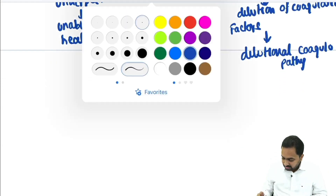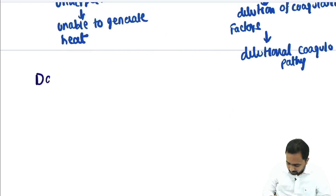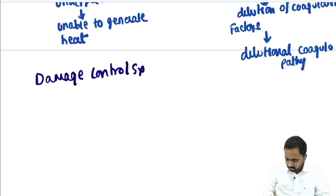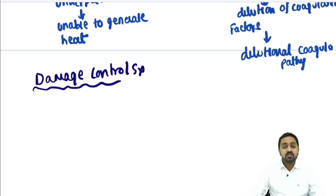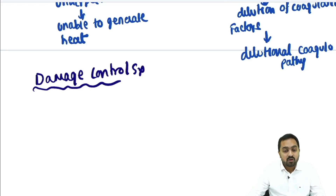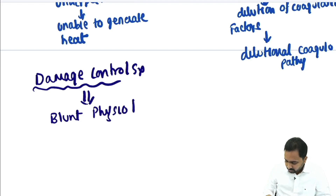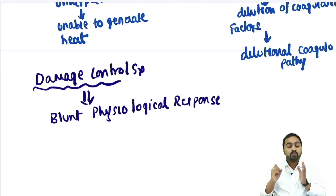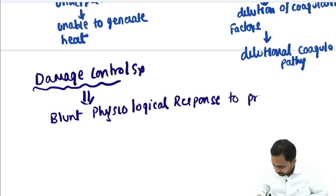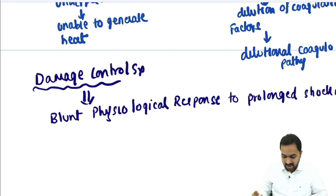Now, what is damage control surgery and why does it come about? The main idea of this surgery is to blunt the physiological response — the main target is to blunt the physiological response to prolonged shock and hemorrhage.